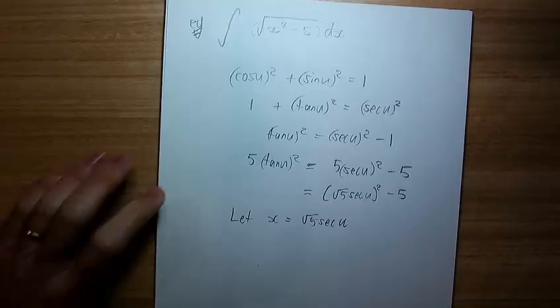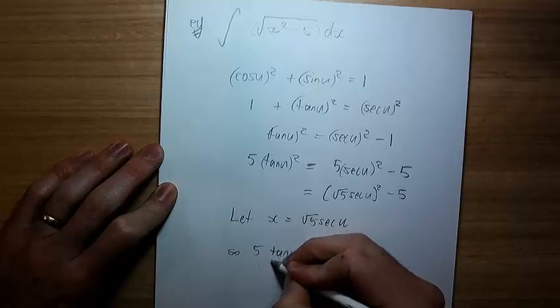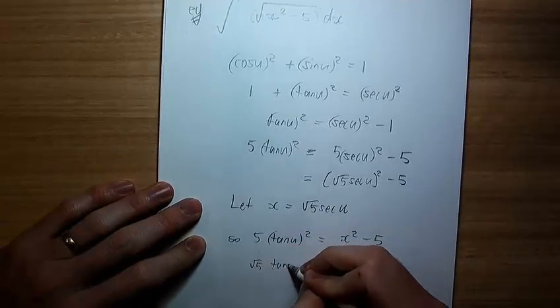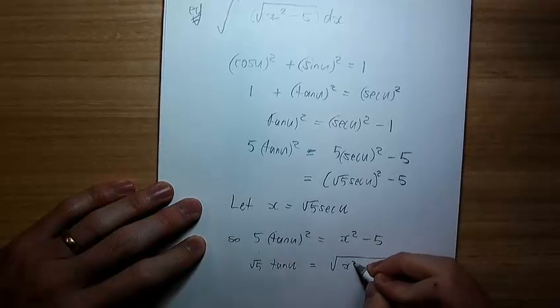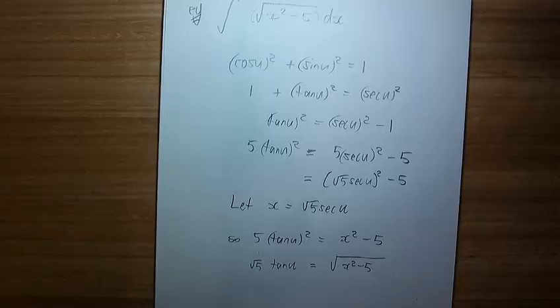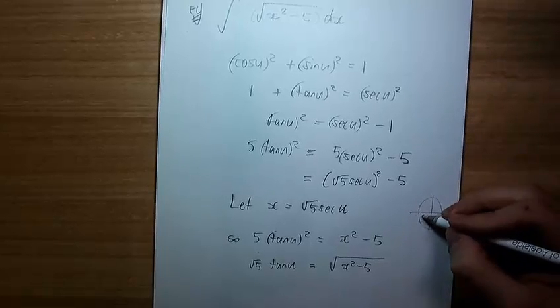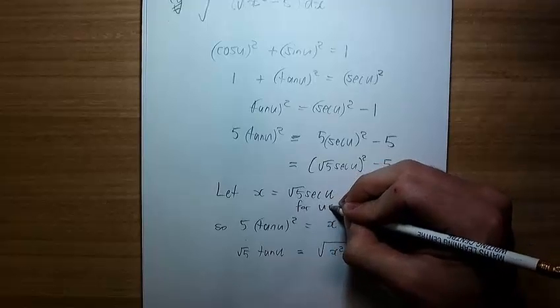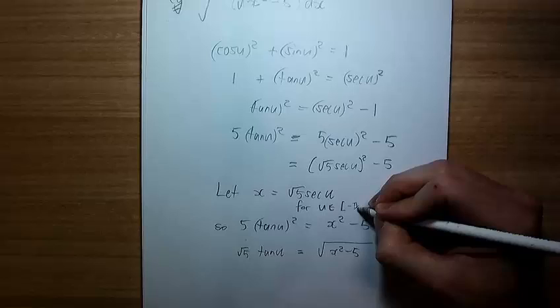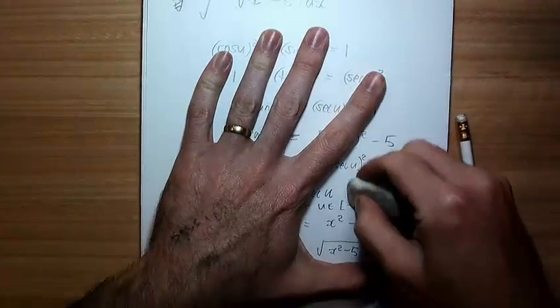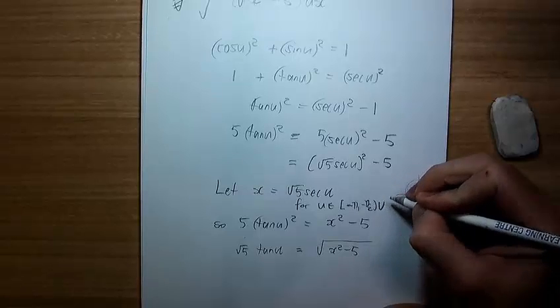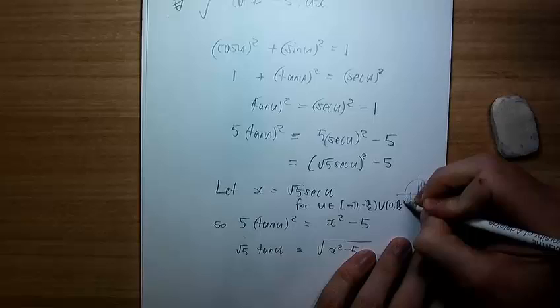Okay. Well, let's just deal with that thing there. So that means that now so 5 tan u squared is now x squared minus 5. And so when I do the root, I'm going to get root 5. So we're going to need to arrange for tan to be positive. Tan's positive there. So I'm going to need to say that for u is in... Man, how do I do that? Minus pi on 2 to minus pi... Oh, that's the wrong order. And from 0 to pi on 2.